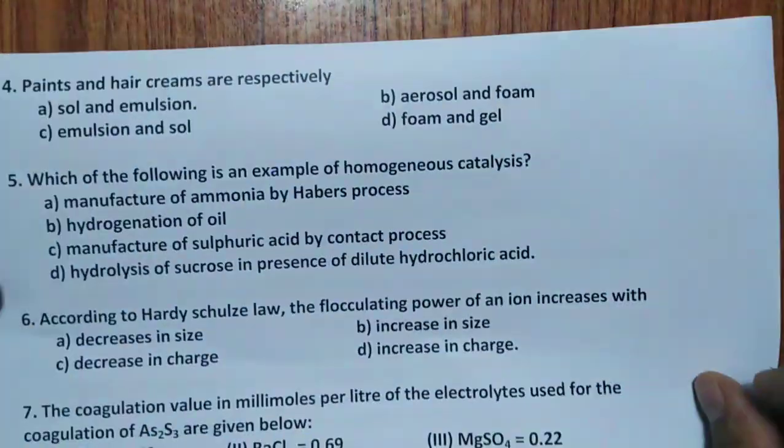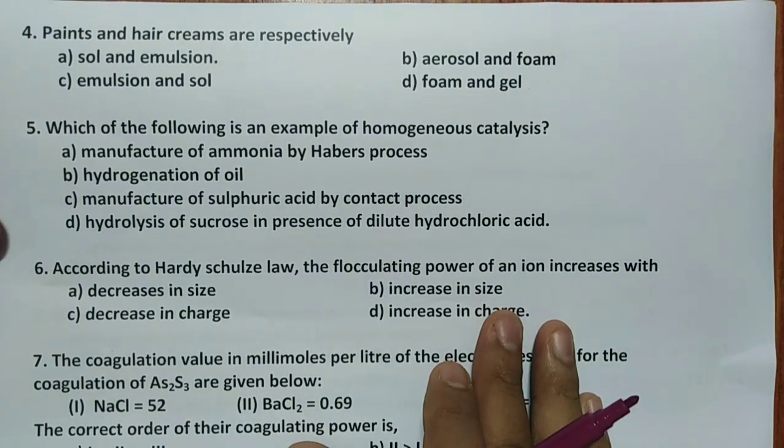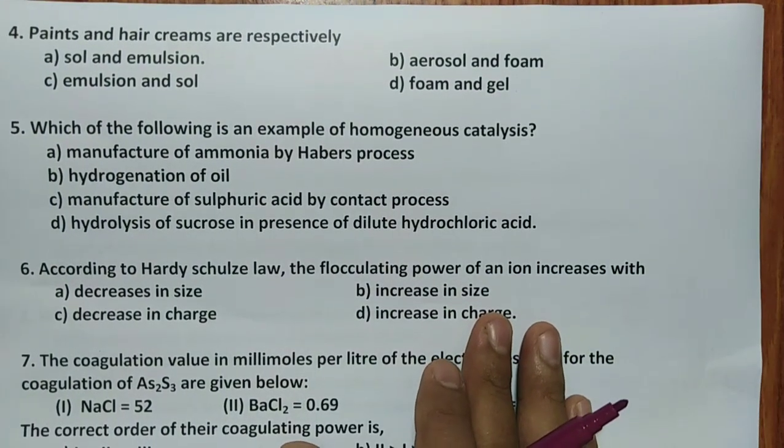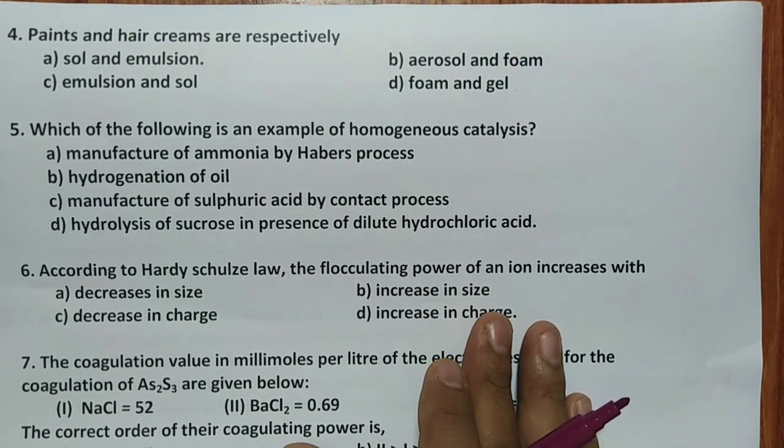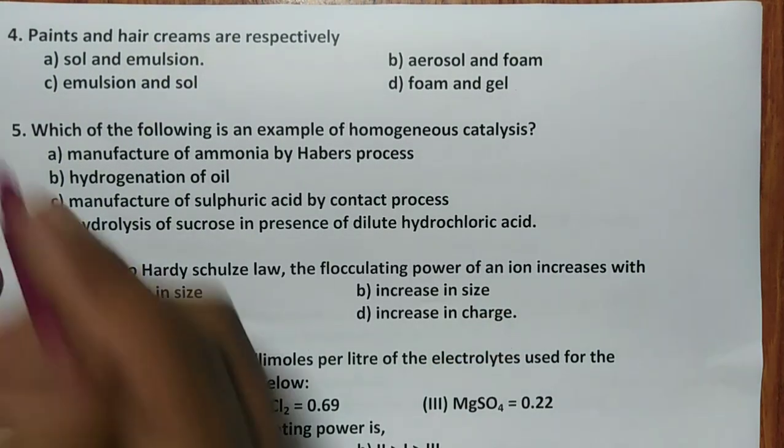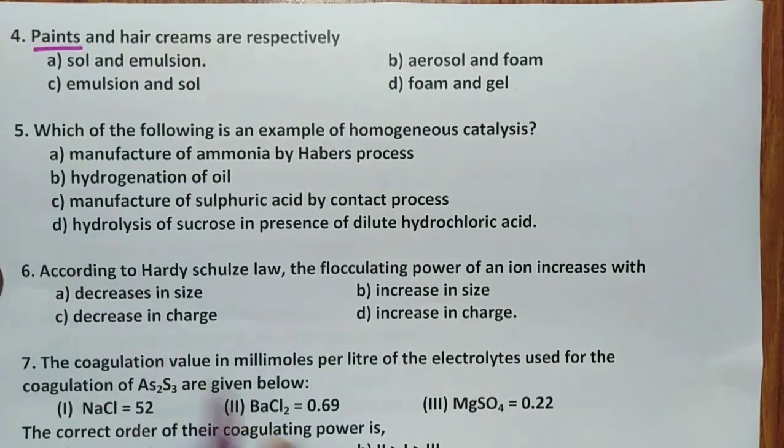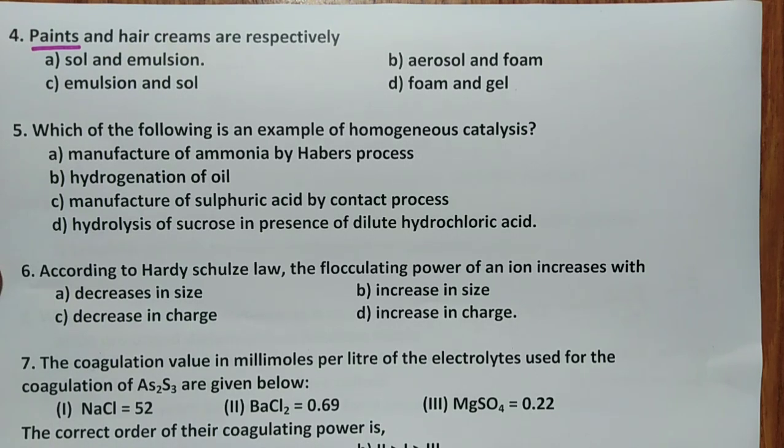Fourth question: paints and hair creams are respectively. We know that paints come under solid in liquid type of sols, so hence it is sol and hair creams are emulsions. So sol and emulsion is the correct answer in this case.